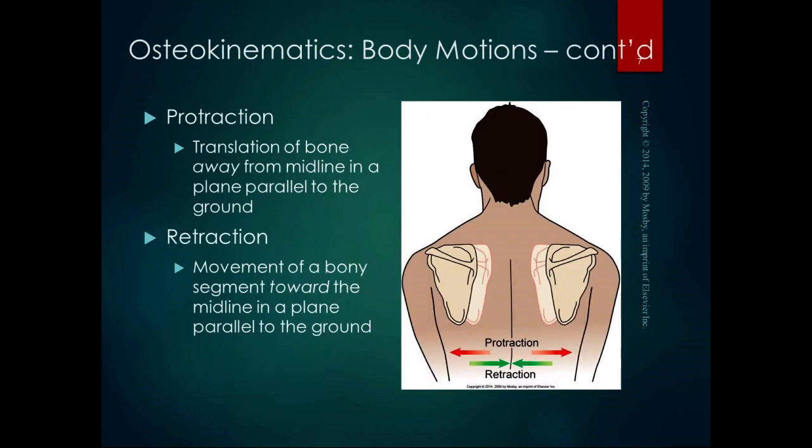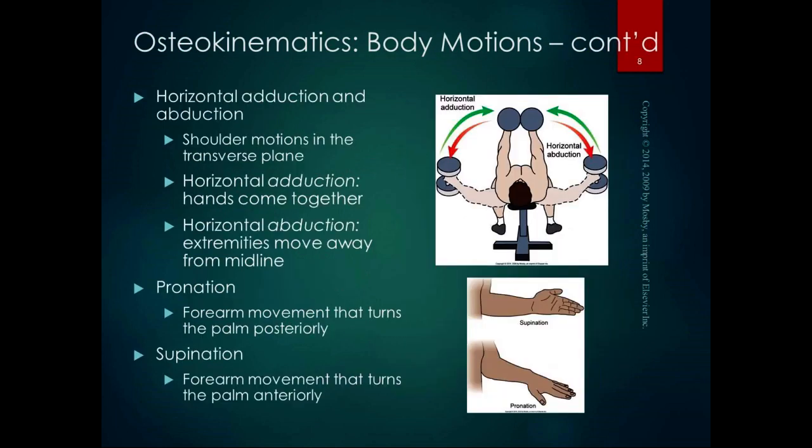Some motions apply only to specific body regions. Protraction and retraction apply only to the scapulae and the mandible. Protraction is translation of the bone away from the midline in a plane parallel to the ground — spreading the scapulae apart. Retraction brings them back toward the midline. For the mandible, protraction moves it forward and retraction moves it backward.